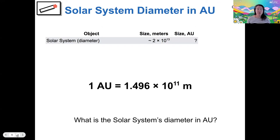Here's an example problem that you can play with. Let's say that the diameter of our solar system is 2 times 10 to the 13 meters in diameter. If we wanted to convert this to AU, I'm going to show you exactly how we would do that. So we're going to need to use this conversion factor, which is that 1 AU is equal to 1.496 times 10 to the 11 meters.